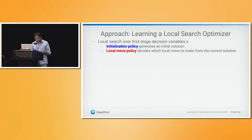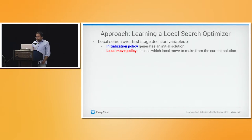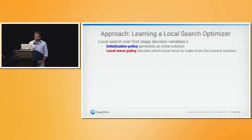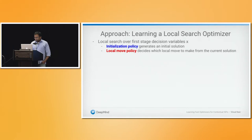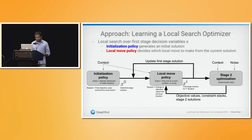For this work, we assume all decision variables are binary — that's what makes the problem hard. We use RL to learn a local search optimizer with two parts: one that generates an initial solution by sampling from some distribution, and a local move policy that says, given the current solution, how do I make a local move to get a better solution? We jointly learn both the initialization policy and the local move policy so that the resulting optimizer produces very good results quickly.